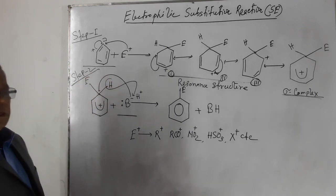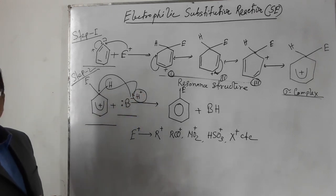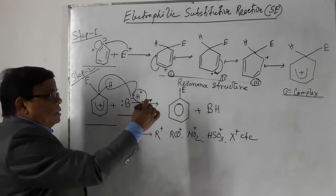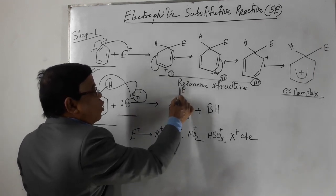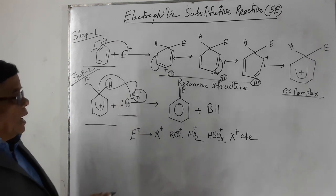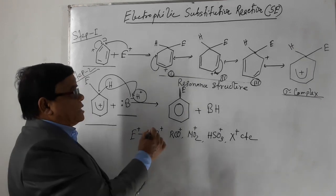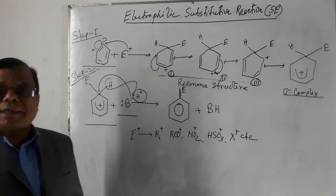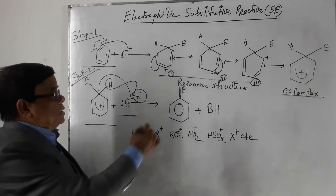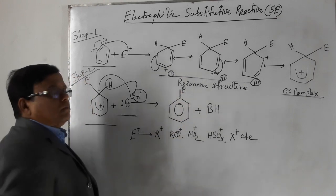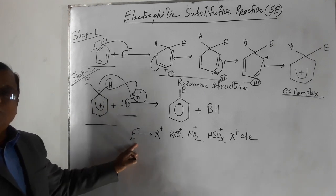In step two, the sigma complex, by releasing one hydrogen proton, allows the electrophilic reagent to form a new strong bond, and the substitution product of benzene is formed. This product is stable and the aromatic character is regained. The product is called substituted benzene, where E is the electrophilic reagent.